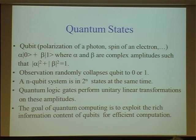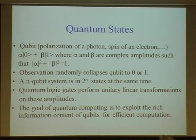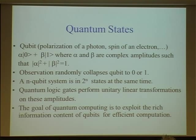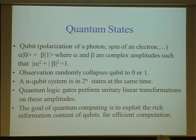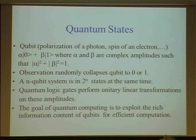A system of n qubits is simultaneously in 2^n states — a probability mix over 2^n states. So even a small number of qubits can represent in principle a large amount of information. Quantum logic gates perform certain transformations, which happen to be unitary linear transformations on the coefficients alpha and beta. The goal of quantum computing is to exploit the rich information content of qubits for efficient computation, even despite the fact that when we observe these bits, they collapse to zero or one.